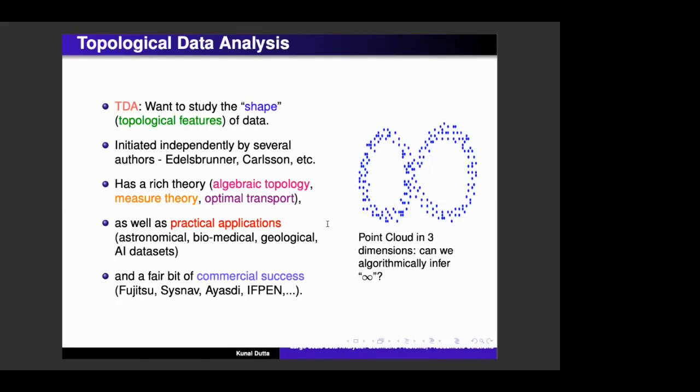So this was initiated by several people independently coming from algebraic topology or coming from computer science or computational geometry. So Herbert Edelsbrunner, Gunnar Carlsson, and several others during the 90s. And it has a lot of mathematical theory in there. So you have algebraic topology, measure theory, optimal transport, functional analysis, maybe geometrical probability, and also a lot of practical applications.